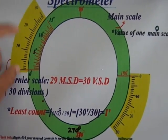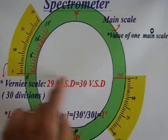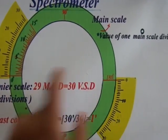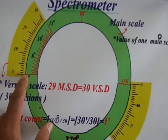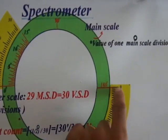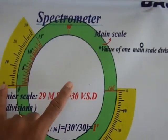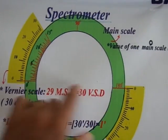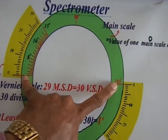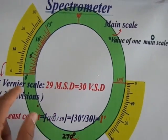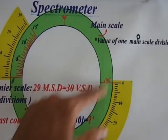These two vernier scales are diametrically opposite, so here zero and here 180 degrees. Then in the main scale, one can see...